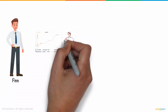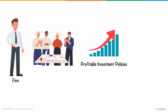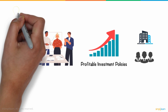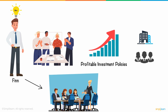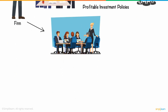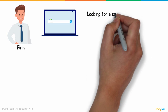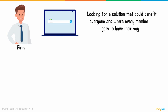Finn is part of the management team in an MNC, and he has come up with some profitable investment policies for his company and his employees. Before its implementation, he needs to pitch his idea in front of the board of directors. But the board didn't approve of his idea, and that too without any explanation for their decision. Disappointed by this, he started browsing the internet, looking for a solution that could benefit everyone and where every member gets to have their say.